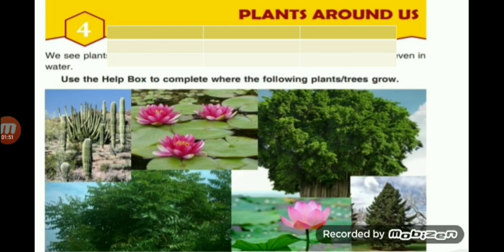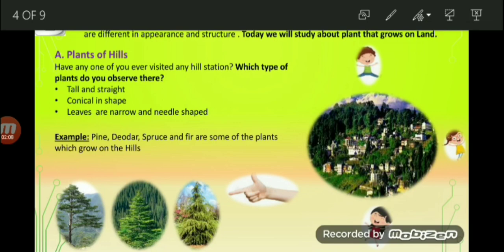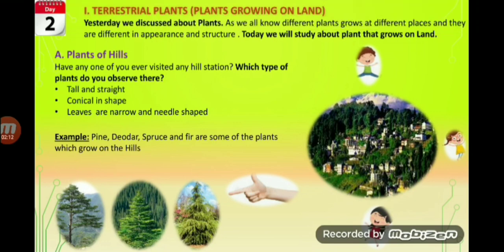What are terrestrial plants? You have studied about terrestrial animals — animals that live on land are called terrestrial animals. Likewise, plants that grow on land are called terrestrial plants. There are many different types of terrestrial plants, like mango tree, peepal tree, banyan tree. These plants grow on plains and on land, that's why these are called terrestrial plants. Terrestrial plants are also further divided into different types: plants on hills, plants on desert, and plants on marshy areas.